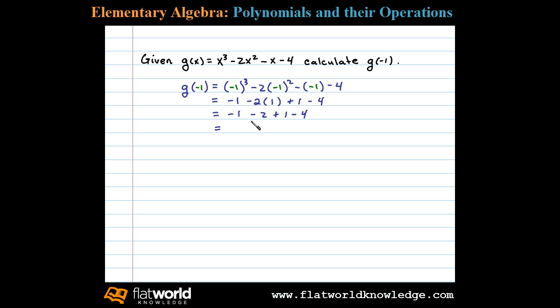Negative 1 minus 2 is negative 3. Negative 3 plus 1 is negative 2. And then finally, negative 2 minus 4 is negative 6. So g(-1) is equal to negative 6.